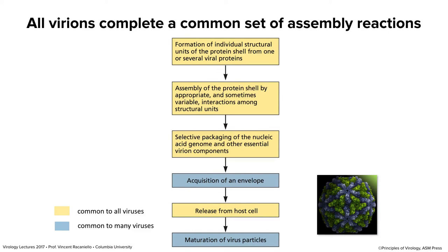All virus particles have a common set of reactions they must undergo to assemble. We've made genomes and viral proteins, so we now have structural proteins, and we're going to follow the events that build those structural proteins into a particle. All viruses share these steps: they must form individual structural units from one or several proteins, assemble a shell by appropriate interactions among those units, selectively package nucleic acid — selective is the key word, because you don't want to put cellular DNAs or RNAs into virus particles. Some viruses acquire an envelope, and they all need to be released from the host cell.